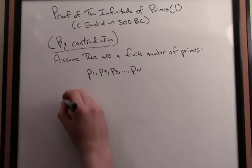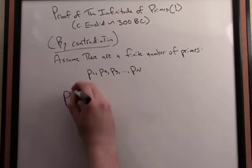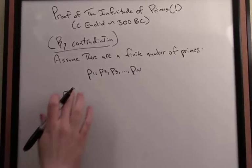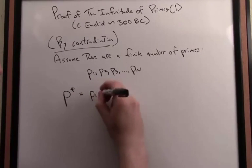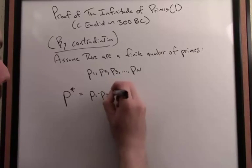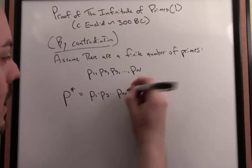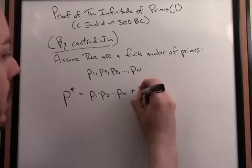Now we're going to introduce this clever step. Let's define a new number. We'll call it P*. And I'm going to define P* as the product of all the primes. Again, we've assumed there's a finite number. And now, importantly, plus one.